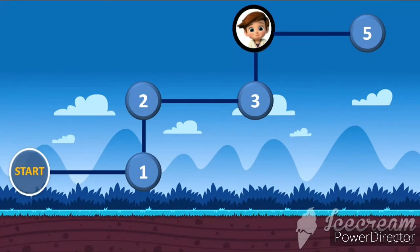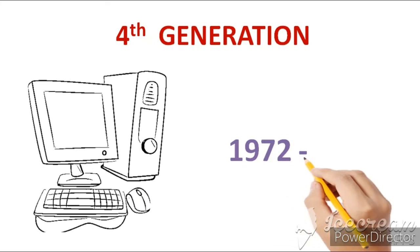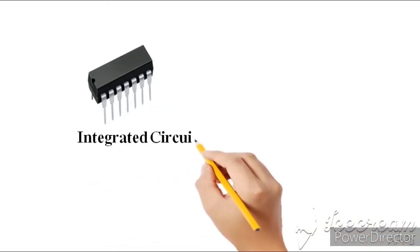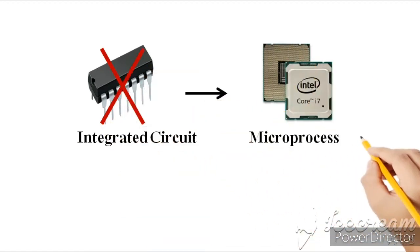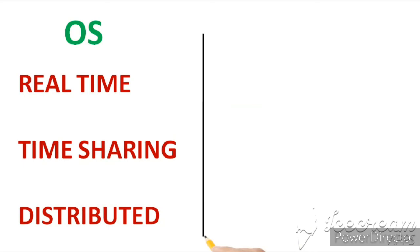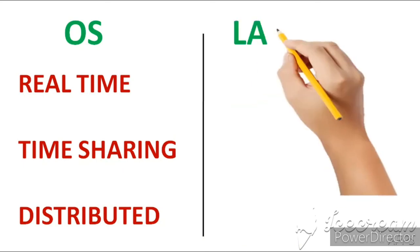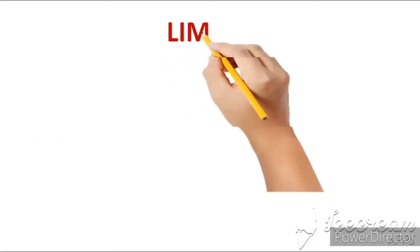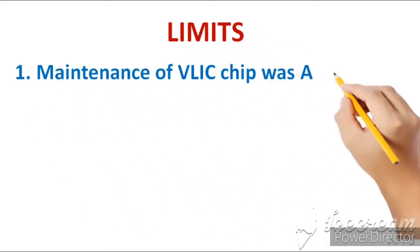Now friends, let's look at the fourth generation. Fourth generation computers' period of time is 1972 to 1980. In this generation, microprocessors were used in place of integrated circuits, which are also called Very Large Scale Integrated circuits. For operating systems, real time, time sharing, and distributed operating systems were used. As for languages, C, C++, and database languages were used. The one limit in this generation was that maintaining the VLSI chip, i.e., the microprocessor chip, was very advanced and challenging.